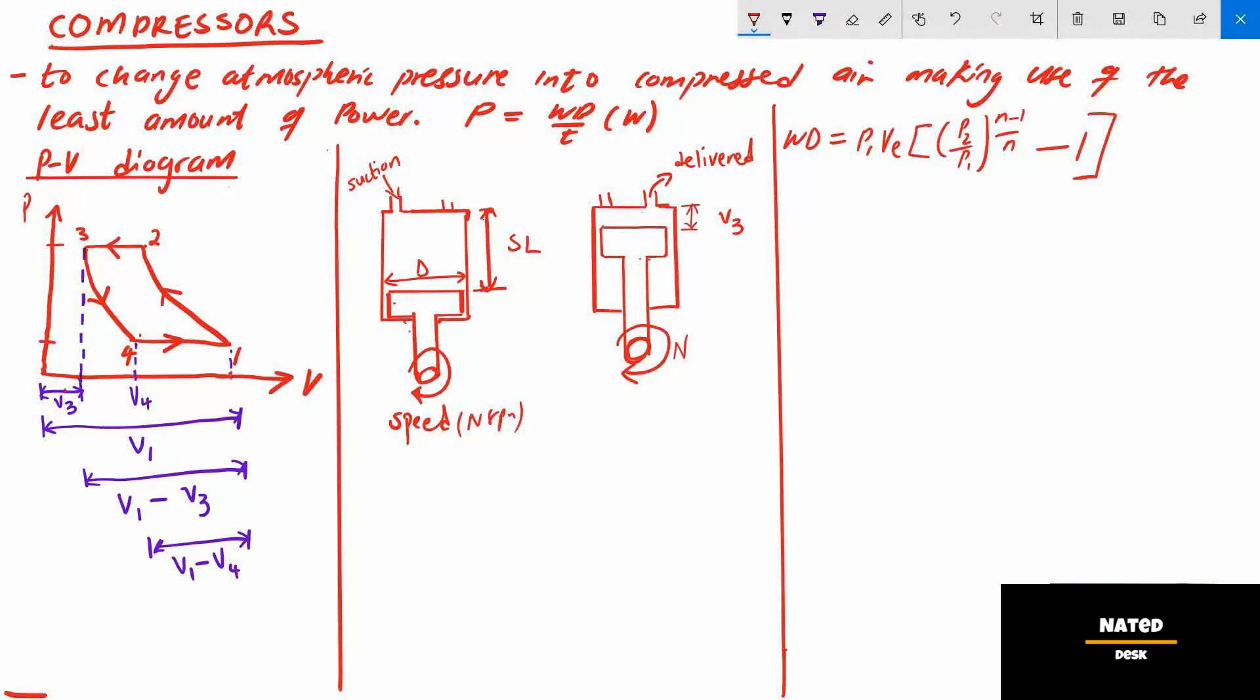So to calculate the work done we need to understand the PV diagram and how a compressor operates. PV diagram has pressure on the x-axis and volume on the y-axis. A compressor consists of a cylinder with inlet and outlet valves. The cylinder also houses a piston which is mounted on a crankshaft with a connecting rod.